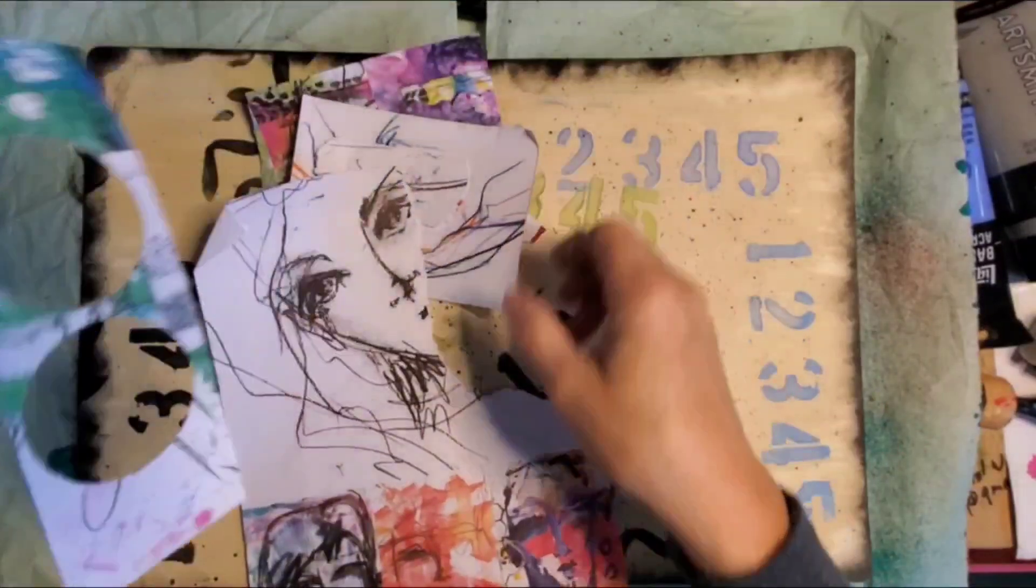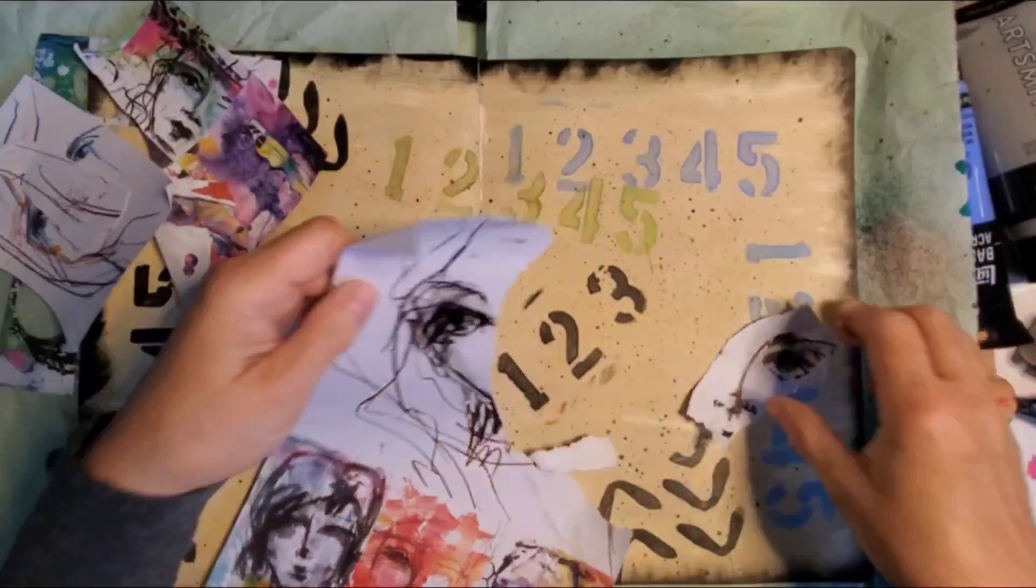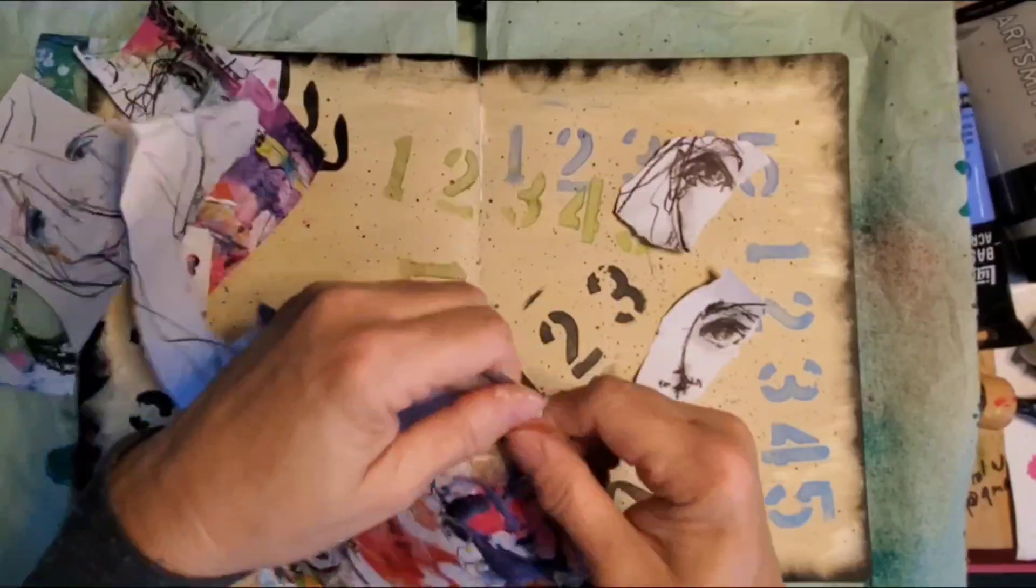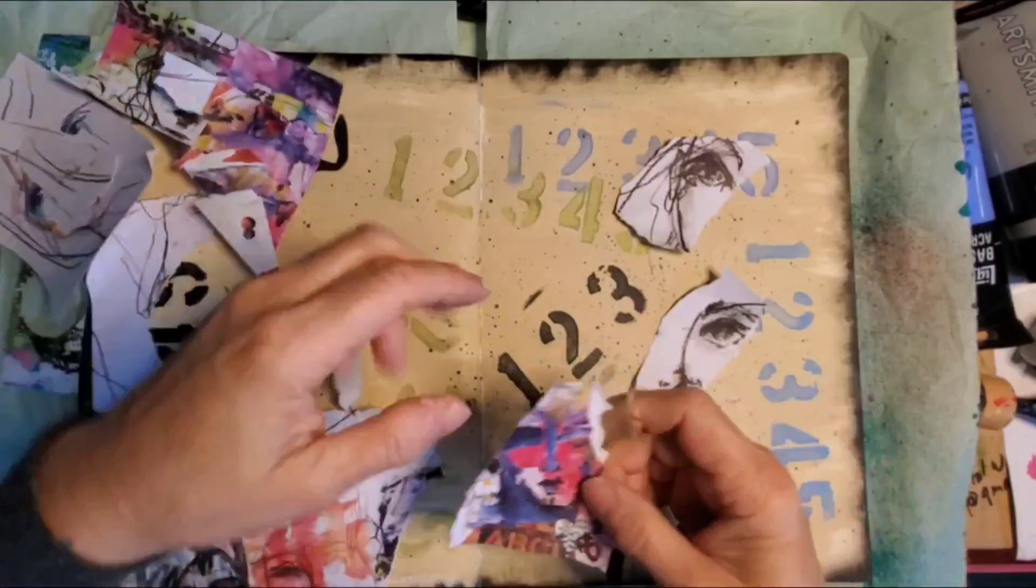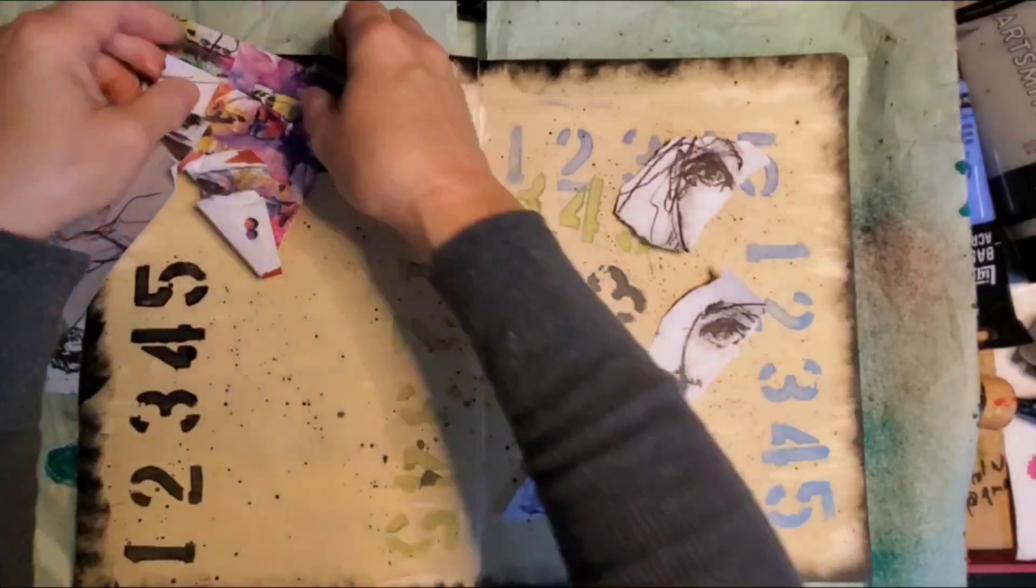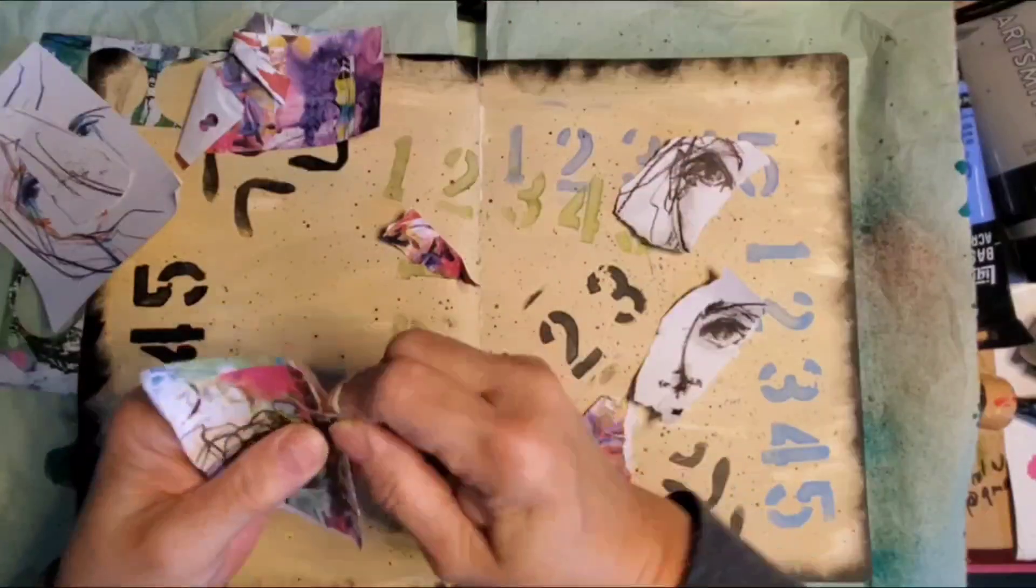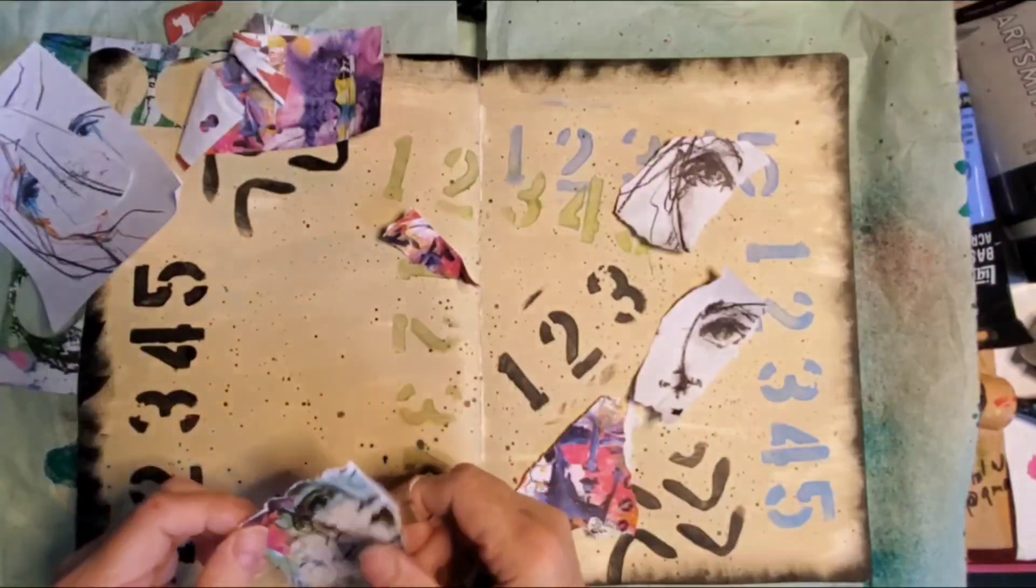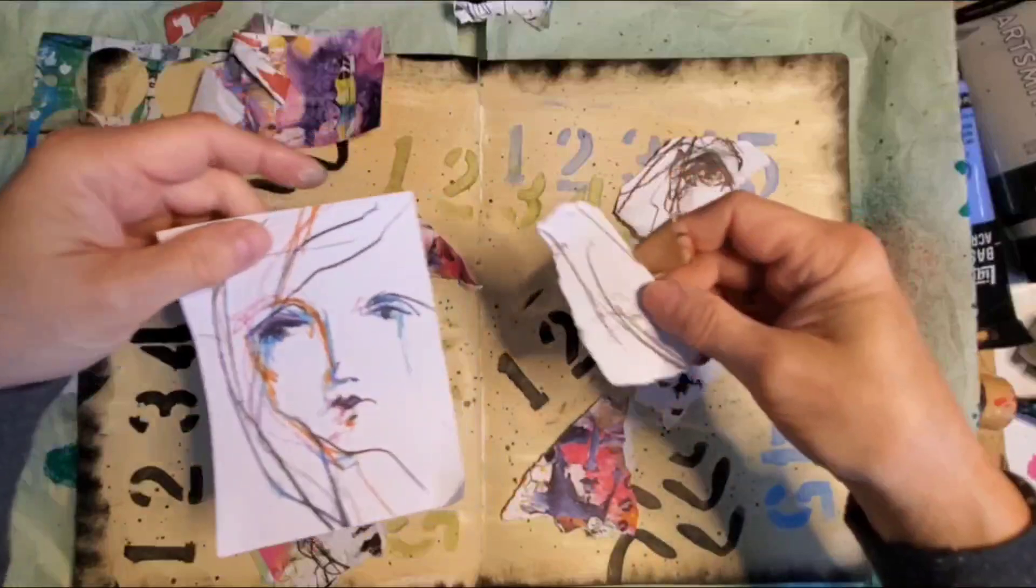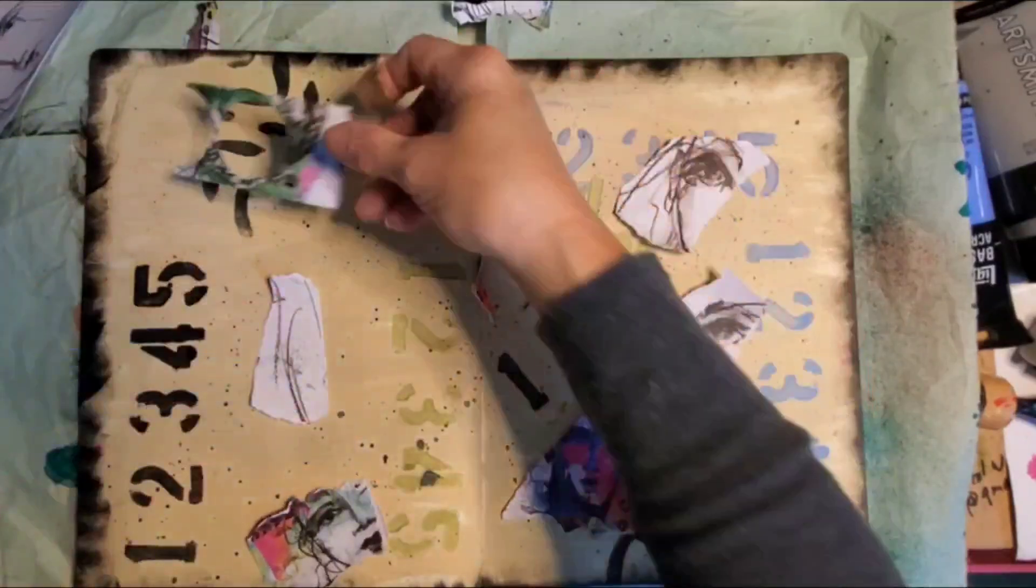I pulled some scrap pieces out that look graffiti-ish, so I'm going to tear some off and we're going to glue those down. Maybe part of this face, might use that somewhere. Part of this, I will tear the edge. Just some pieces from that. This here kind of looks graffiti-ish. I'll just throw that down.